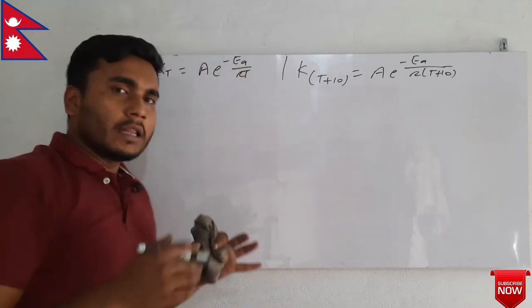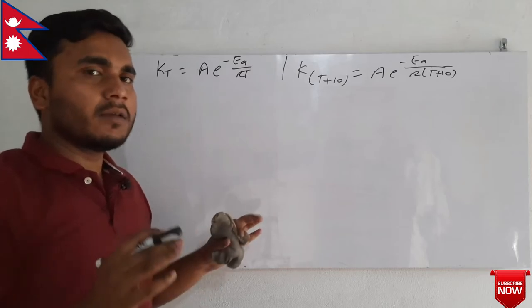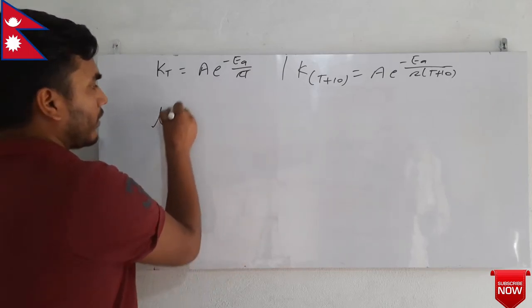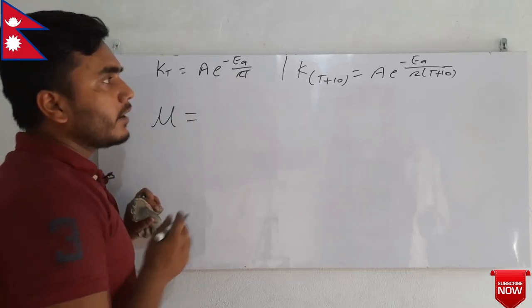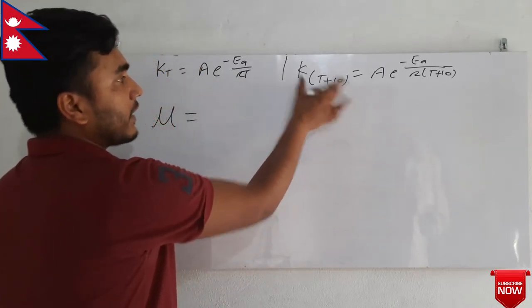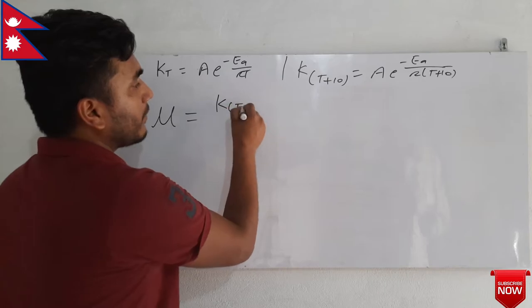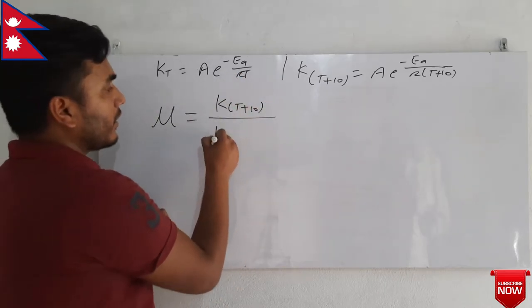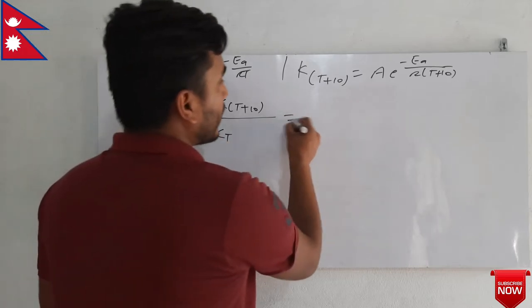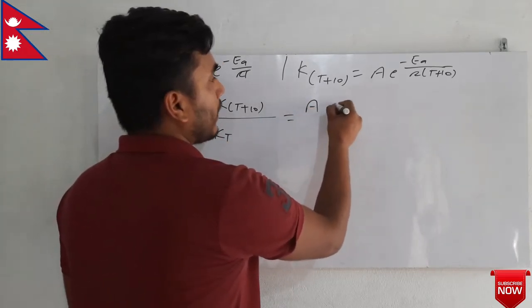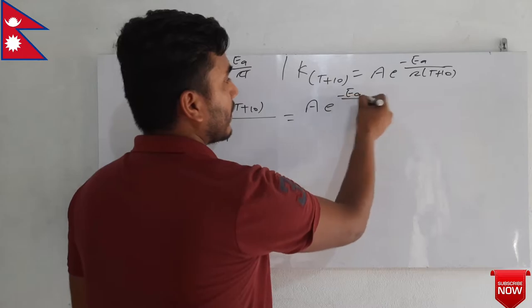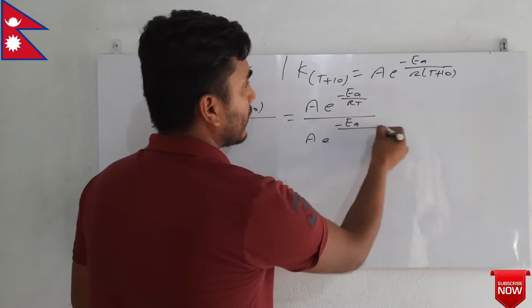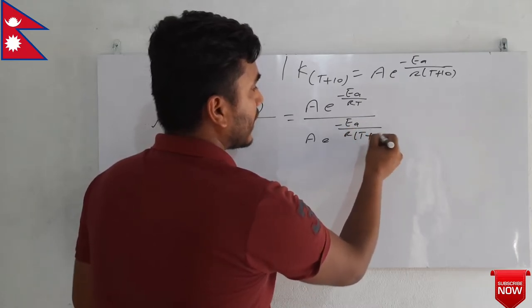We know that the temperature coefficient is nothing but the ratio of the rate constants. So this temperature coefficient will be equal to the rate constant at higher temperature, KT plus 10, divided by the rate constant at lower temperature, KT. Now let us put the values: A·e to the power minus Ea by R(T plus 10) divided by A·e to the power minus Ea by RT.